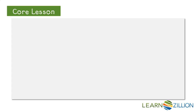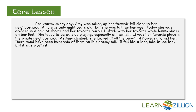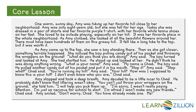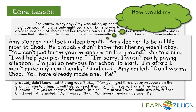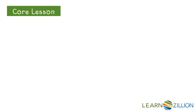I need to reread my story again, this time stopping at places where the character could be thinking or feeling something. Let's try it with the third paragraph. Amy stopped and took a deep breath. Amy decided to be a little nicer to Chad. He probably didn't know that littering wasn't okay. Maybe I could stop here and tell about what Amy was thinking when she decided to be nicer to Chad. So now I ask myself, how would my character feel or act if this were happening? I bet that Amy has a reason to decide to be nicer to Chad. Maybe she was the new kid once too. That way, she would be able to understand what Chad is going through.